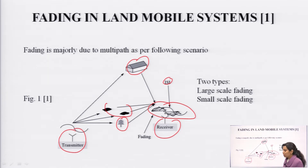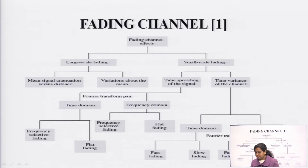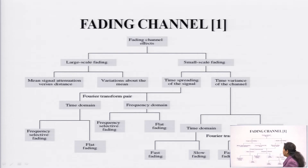The signal strength or power gets reduced due to this multipath fading. There are two types of fading: the first one is large scale, and the second one is small scale fading. This diagram basically shows the different types of fading.